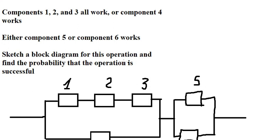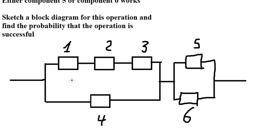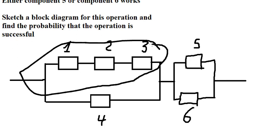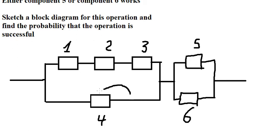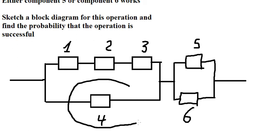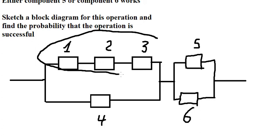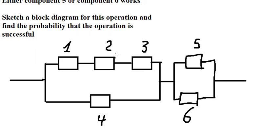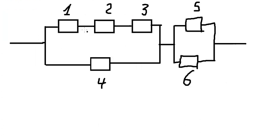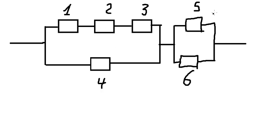Now we want to find the probability that the operation is successful. In this situation, if this one is successful, the operation will be successful even if another part fails. We need to find the probability that each of these parts is successful.